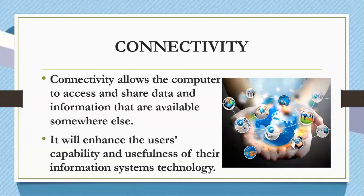Connectivity. Aside from the five information system technology components, another important element of a computer is connectivity. Connectivity allows the computer to access and share data and information that are available somewhere else — this usually means an internet connection. An internet connection comes in many forms, such as a telephone line, through wireless connection, or through cable. Connectivity will enhance the user's capability and usefulness of their information systems technology, and to be a competitive user, one must understand all these essential parts including connectivity, so that one may be effective in their particular workplace or home application.